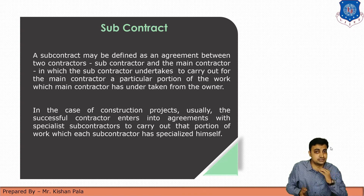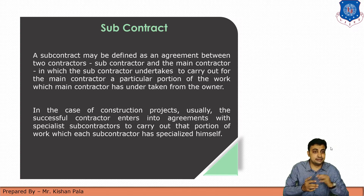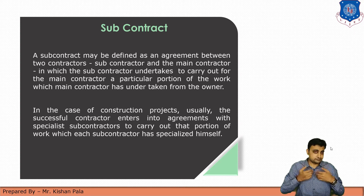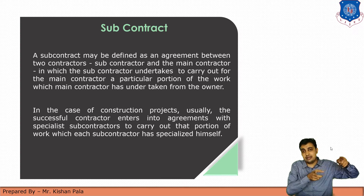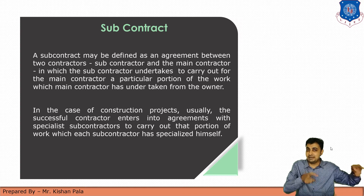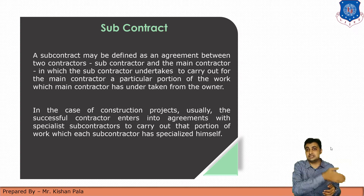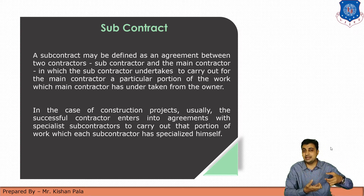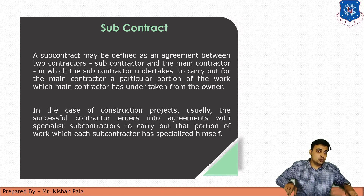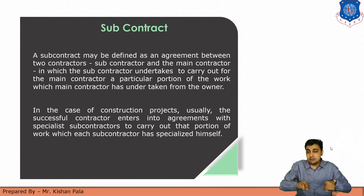The fifth type is the subcontract, which is an agreement between two contractors — the subcontractor and the main contractor. For example, if a big contractor takes a road construction project from Ahmedabad to Vadodara, which is approximately 100 km, the main contractor may divide it and give it to subcontractors in 50 km portions. After getting the main contract, the work is sub-parted — this is subcontracting.